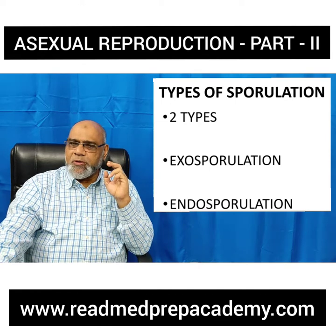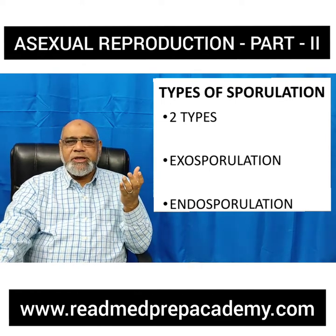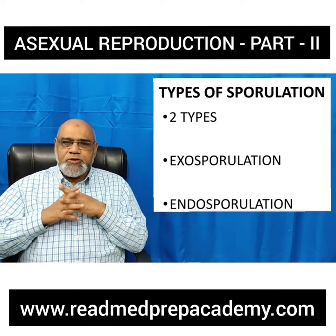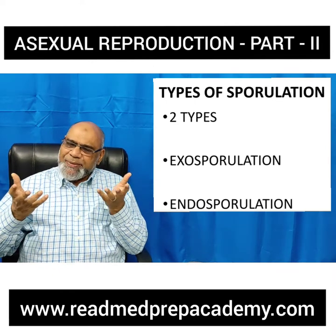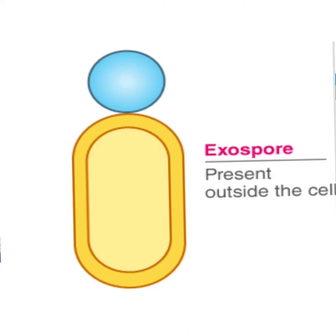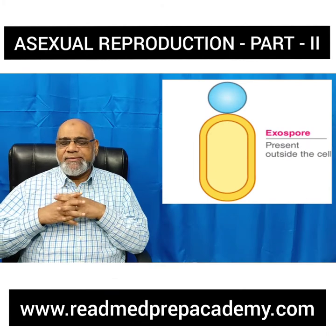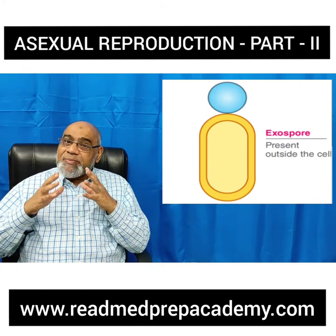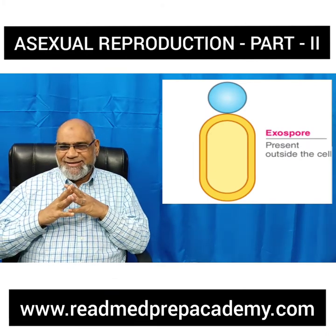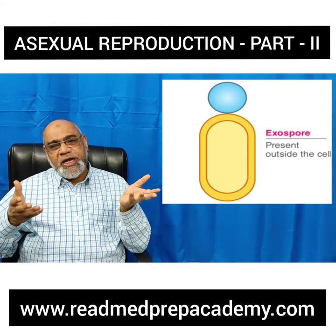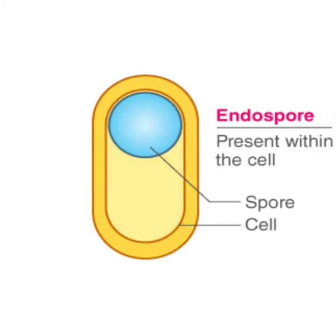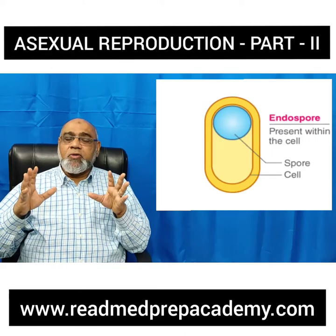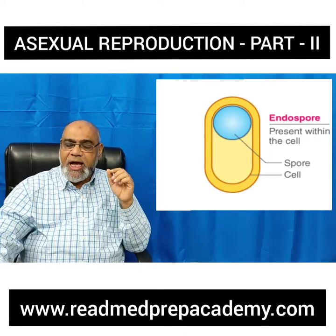There are two types of sporulation. One is called exosporulation and the other is called endosporulation. In exosporulation, the spore is formed outside the parent body by the parent cell, and the parent cell does not disintegrate. In endosporulation, an endospore is formed which is present within the parent body, and the spore is released only once disintegration of the parent body occurs.